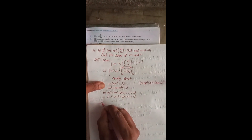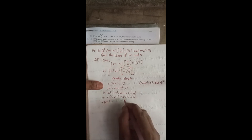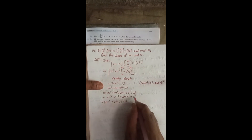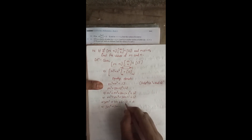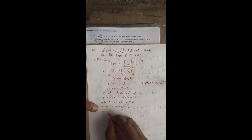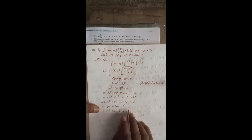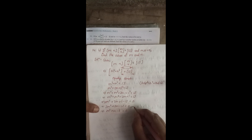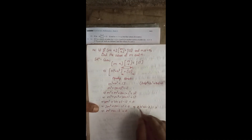So combining: 2M² plus 2M plus 1, and bringing 13 to the other side gives 2M² plus 2M plus 1 minus 13 equals 0, which is 2M² plus 2M minus 12 equals 0. Taking 2 as common, we get M² plus M minus 6 equals 0.